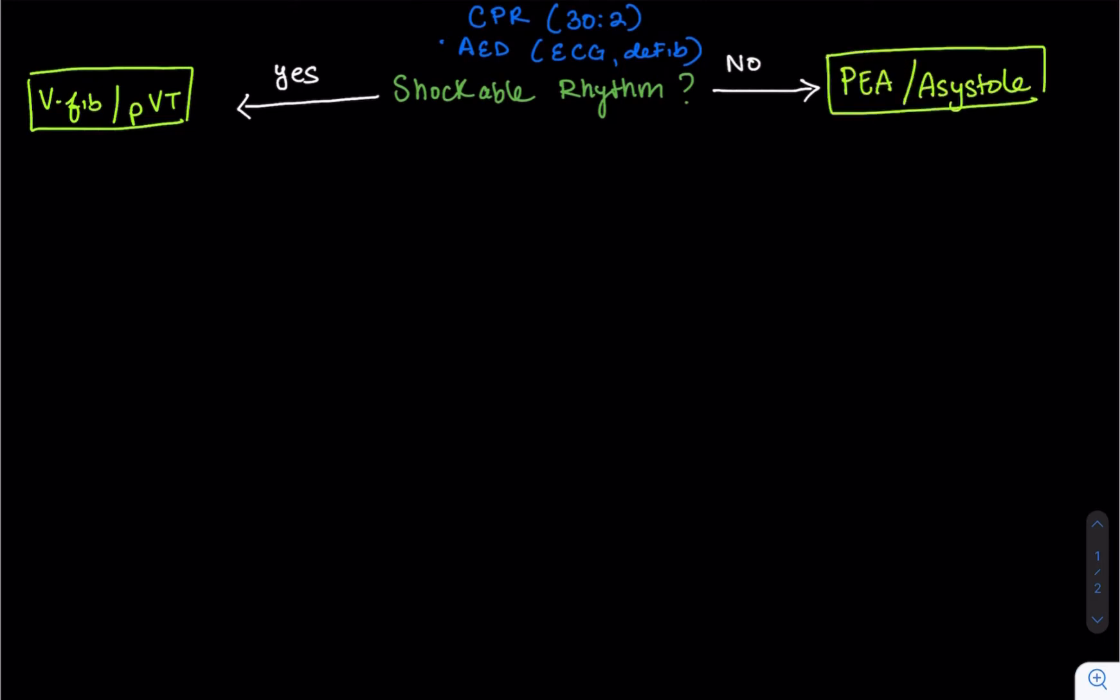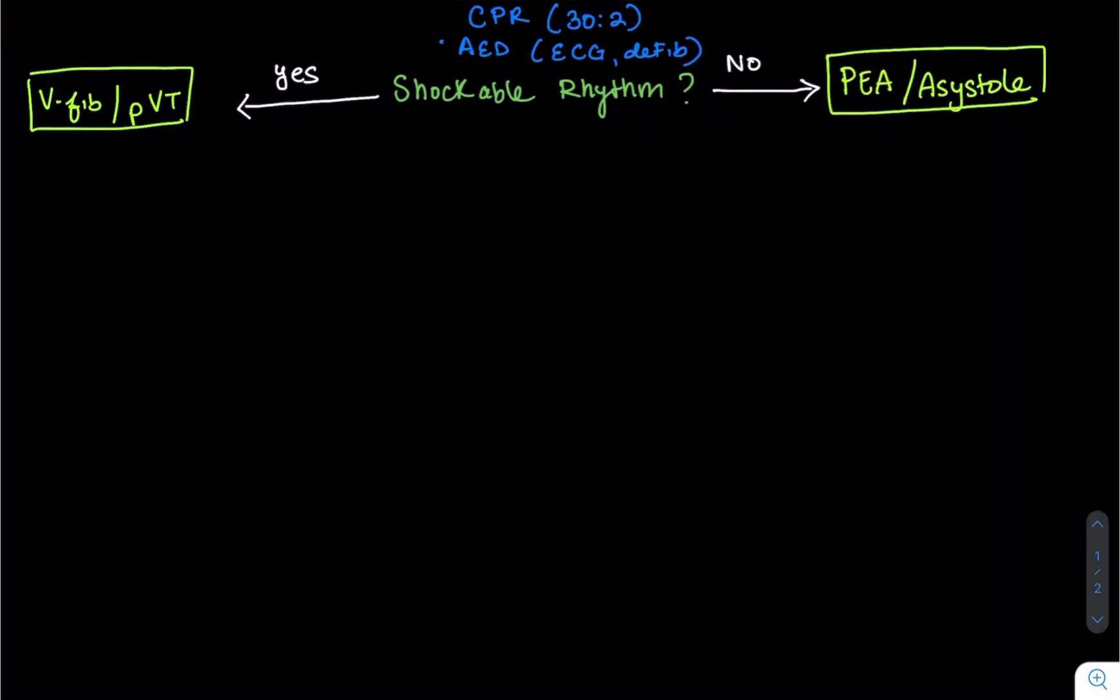A shockable rhythm, that's going to include VFib and or pulseless VTAC. Unshockable rhythms, on the other hand, are PEA, pulseless electrical activity, and asystole.